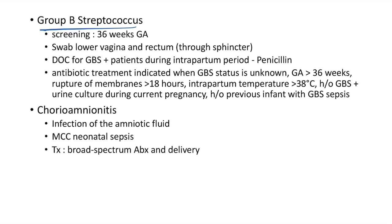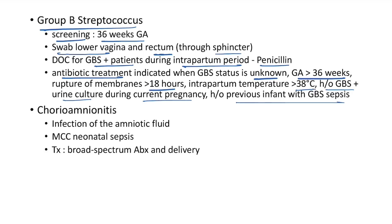Group B Streptococcus (GBS) screening should be done at 36 weeks gestational age by taking a swab from the lower vagina and rectum through the sphincter. The drug of choice for GBS-positive patients during the intrapartum period is penicillin. Antibiotic treatment is indicated when GBS status is unknown, gestational age <36 weeks, rupture of membranes for >18 hours, intrapartum temperature >38°C, history of GBS-positive urine culture during current pregnancy, or history of previous infant with GBS sepsis.